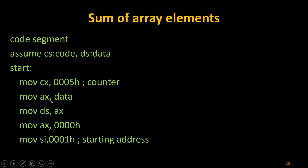Since the value of AX has been changed, I have to reset AX. I use the command MOV AX, 0000h, which resets AX so that all zeroes are placed inside the AX register.